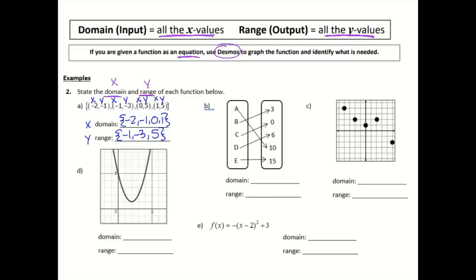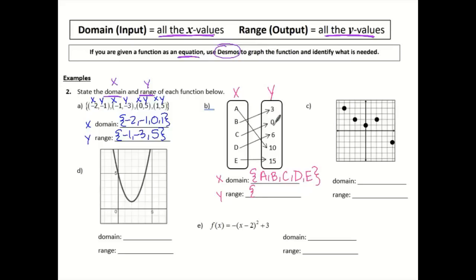If I look at letter B, I have a mapping like I had before. So my x's are all in this column and my y's are all in this column. My domain is my x — I'm going to do curly brackets and then list anything in my x column. Even though they're letters, they're still part of the domain: A, B, C, D, and E. That's the domain. My range will be all of the y's: 0, 3, 6, 10, and 15 — we like to go in order.